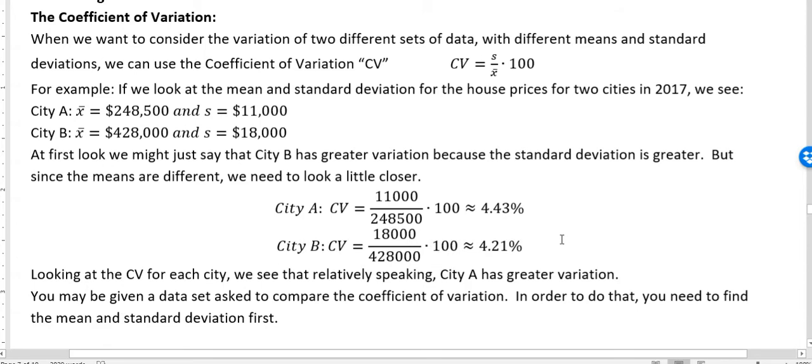When we look at those coefficients of variation, we can see they're actually very similar, very close together. But City A is a little greater because 4.43 percent is greater than 4.21 percent. So City A actually has more variation in the data.